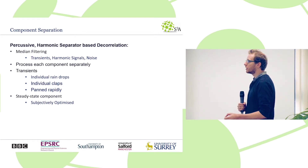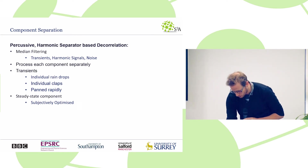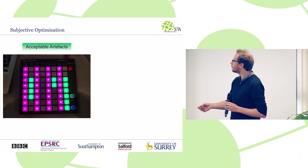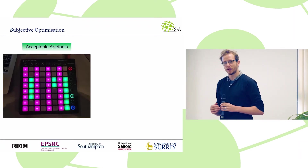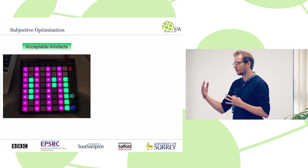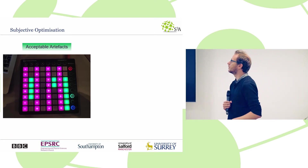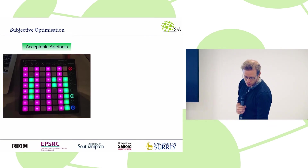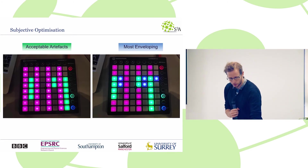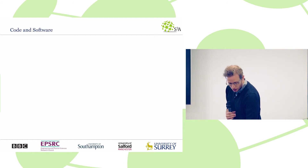For the steady-state components, it's less clear what the best approach is, so we ran subjective tests to find the best way to decorrelate those. We used an interface with coloured buttons where participants could listen to all the stimuli — different materials with different processing types and filter lengths — and select which ones didn't add unacceptable artefacts. They could also rate which were most enveloping, giving us subjective data on what avoids artefacts while maximising envelopment for different materials.